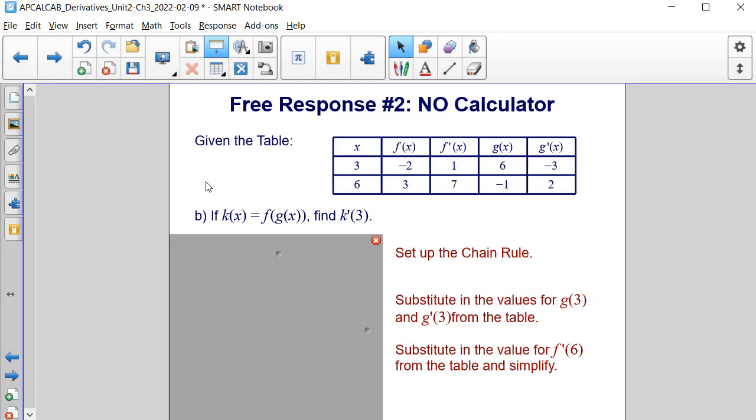Now let's solve part B. If k of x is equal to f of g of x, find k prime of 3. Alright, so the first step here is to set up the chain rule. And the chain rule for f of g of x is equal to f prime of g of x times g prime of x, or the derivative of the outside, keep the inside the same, times the derivative of the inside.